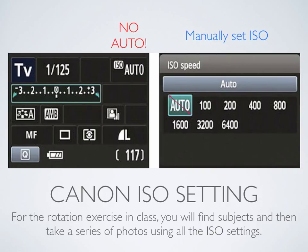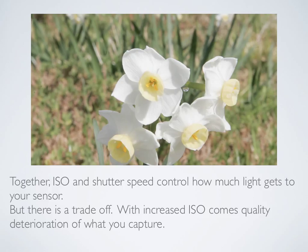Do this a couple of times. Find a person, have them as a subject. Find an object, a building, a tree, something in nature, something around the building, and take the series — called a rotation — of photos using all of your ISO settings. Dr. Keith will have the instructions for you in class Thursday night. Together, ISO and shutter speed control how much light gets to your sensor, but we have to be aware: there is a trade-off with increased ISO, which means higher numbers, and that is quality deterioration of what you capture.